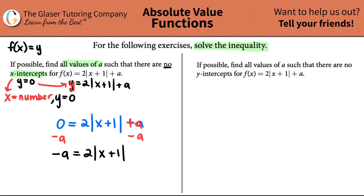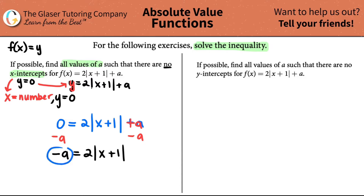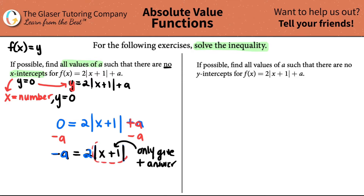The question is asking that we do not want any x-intercepts, so I need to make this into something that is not true. We want to solve for all values of a. Now let's talk about what an absolute value is. Absolute values always give positive answers out. This is saying that if this whole expression is going to put out a positive value, then this side — 2 times the absolute value — will always be a positive value. So you're basically setting it up by saying negative a is going to equal a positive value, which makes no sense.